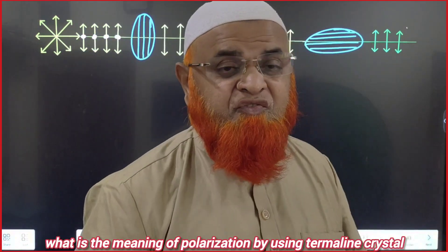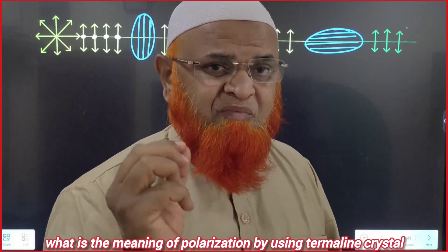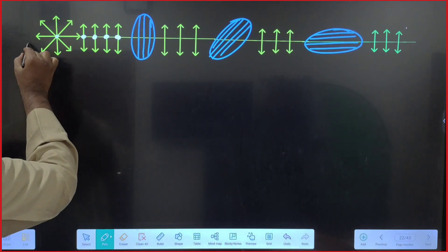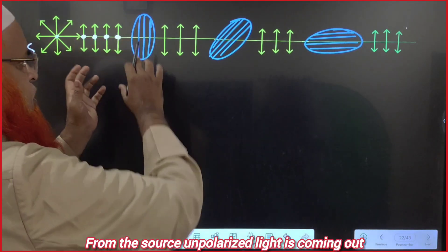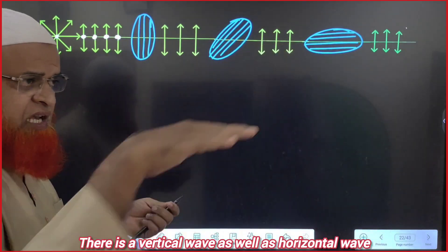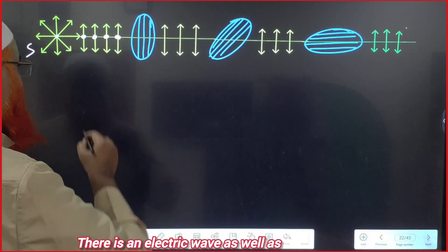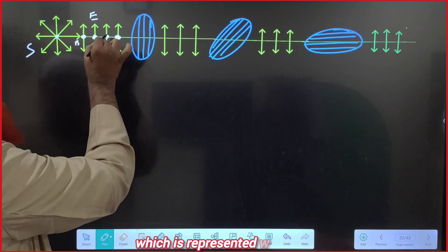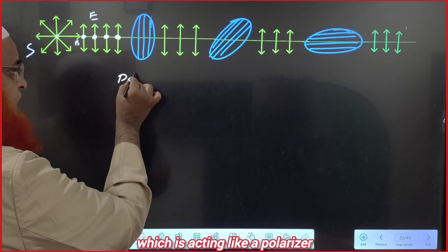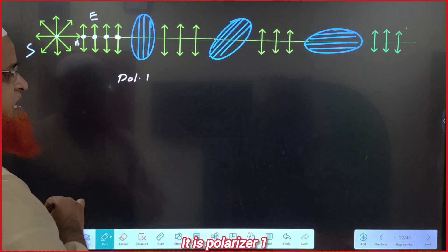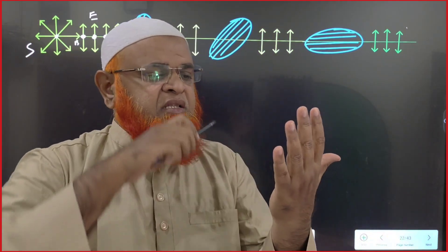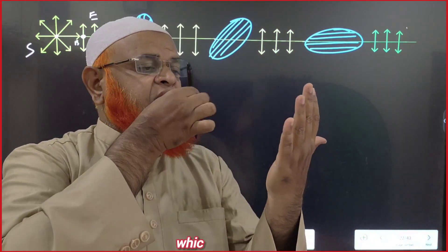We shall discuss what is the meaning of polarization by using a tourmaline crystal. There is a source from which unpolarized light is coming out. Unpolarized light means there is a vertical wave as well as a horizontal wave — an electric wave as well as a magnetic wave. The tourmaline crystal acts like a polarizer (polarizer 1). A polarizer has vertical gaps, so the horizontal wave is blocked and the vertical wave passes through.